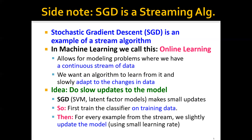Concretely, we first train the SVM classifier on the training data, and then for every example from the stream we slightly update the model using a very small learning rate.